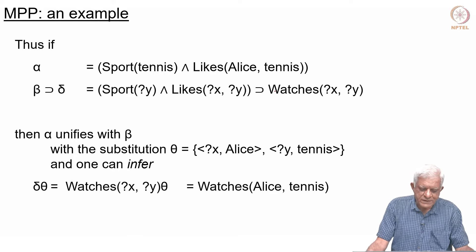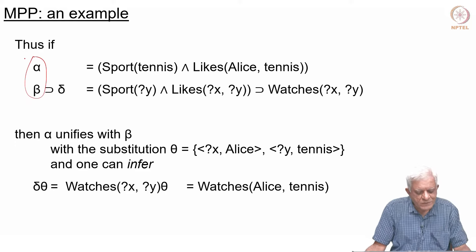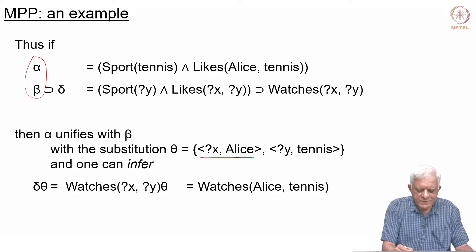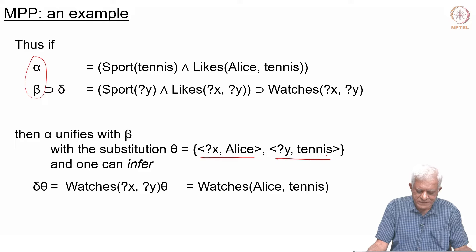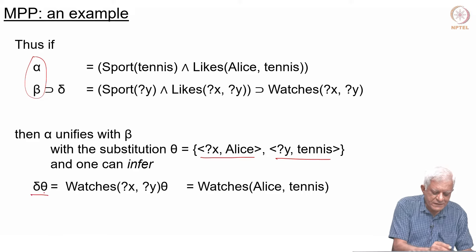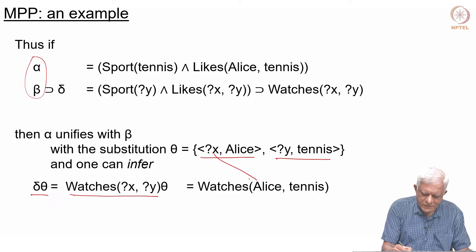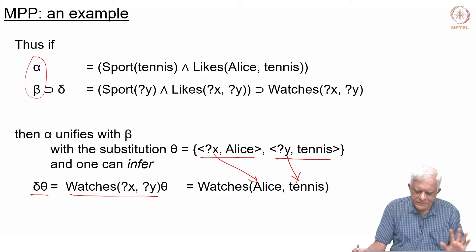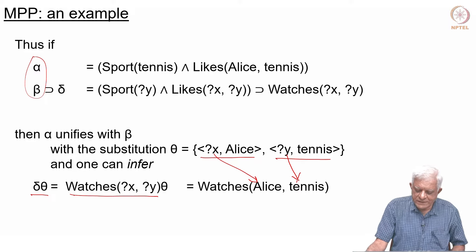What we do is we find a unifier. Alpha unifies with beta. We want to unify the antecedent of the rule with the fact that is given to us, and the unifier is: replace x with Alice, replace y with tennis. That gives us an instance of that rule, and then we can do the modus ponens in the same step and infer delta theta — which means you apply theta — so x is Alice, y goes to tennis, and we have made this inference. Much easier to implement rather than the two-step process that we were talking of earlier, which also involved the guess.